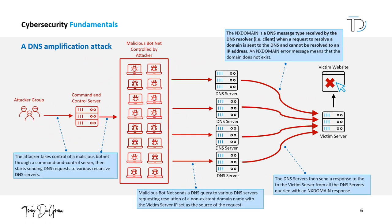The third attack vector is a DNS amplification attack. A DNS amplification attack is a type of distributed denial of service attack that uses the domain name system infrastructure to amplify attack traffic and flood a targeted server with a large amount of traffic. This type of attack is also known as a DNS flood or DNS amplification DDoS attack.